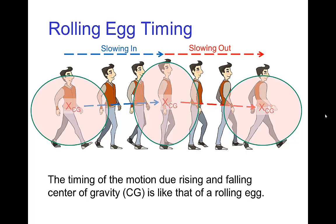Another way to understand that is to imagine an irregular wheel that isn't quite circular, so that it rolls kind of like an egg. As it rises, it slows a bit, and then as the wheel rolls and the center of gravity drops back down, it speeds up again.